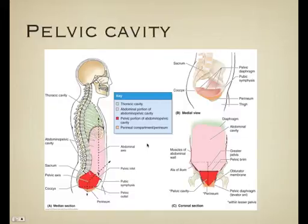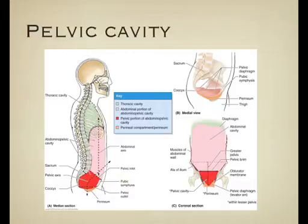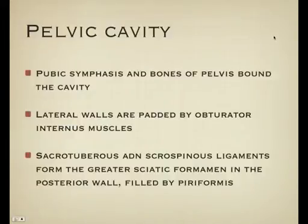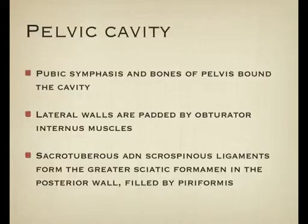The pelvic cavity is the inferior posterior part of the abdominopelvic cavity, and it continues with the abdominal cavity at the pelvic inlet. The pelvic symphysis and the bones of the pelvis bound the cavity. The lateral walls are padded by the obturator internus muscles. The sacrotuberous and sacrospinous ligaments form the greater sciatic foramen in the posterior wall, and that greater sciatic foramen is filled by the piriformis muscle. So the piriformis and obturator internus are actually part of the pelvic cavity and can't be considered just as hip muscles — they also have an effect on the urogenital system.